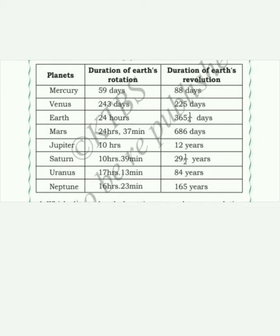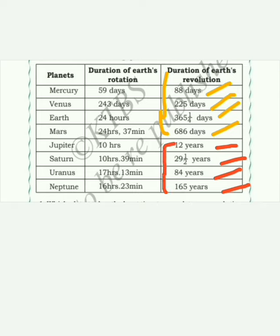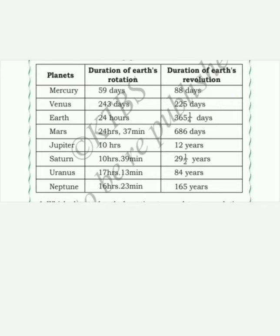Now, looking at the units: the first four planets — Mercury (88 days), Venus (225 days), Earth (365.25 days), and Mars (686 days) — have revolution measured in days. The remaining planets, Jupiter to Neptune, are measured in years: 12 years, 29.5 years, 84 years, and 165 years. So rotation and revolution are expressed in hours, minutes, days, or years depending on the planet.